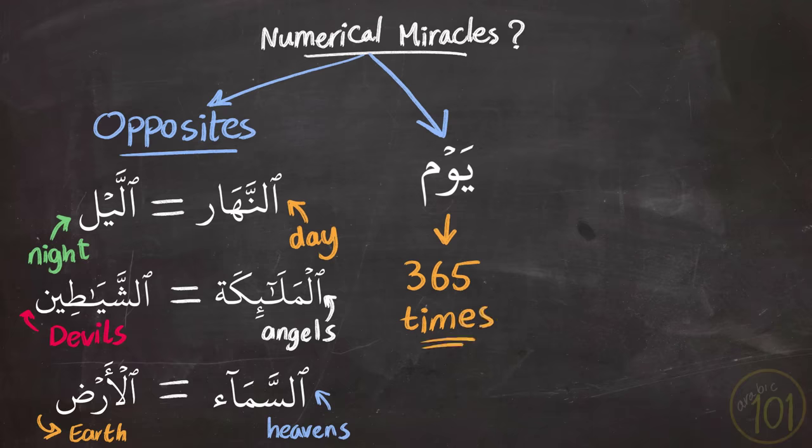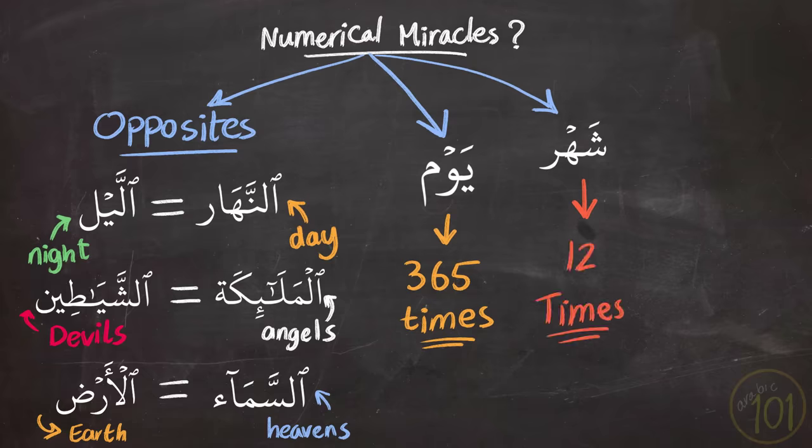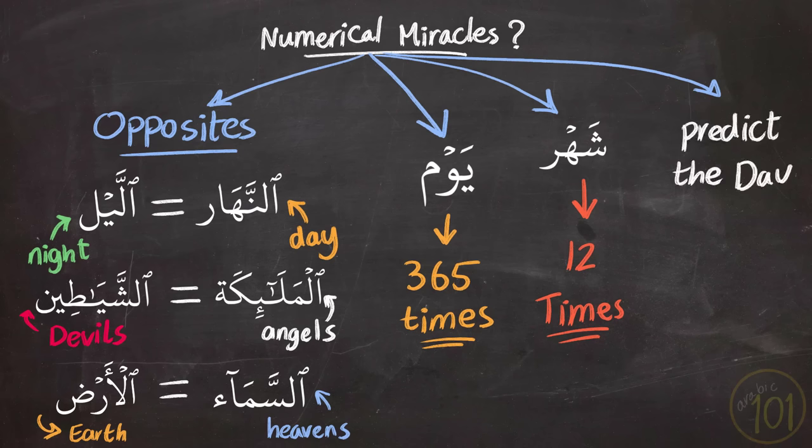And the word shahr, which means 'a month,' was mentioned 12 times in the Quran. Some even went on to predict the date of the Day of Judgment based on some mathematical calculations from the Quran. And the list goes on and on of such similar miracles. Examples of this type of miracles are so common on the internet.